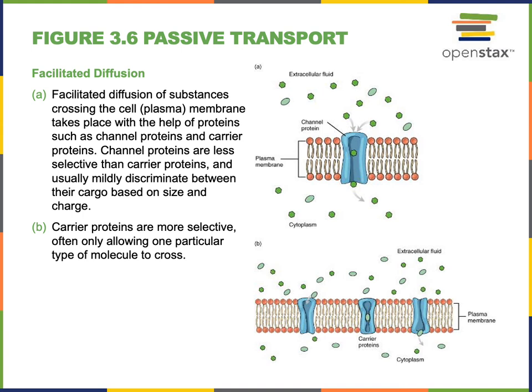Sodium will be moving from a higher concentration in the extracellular fluid to a lower concentration within the cytoplasm. Carrier proteins are a little more selective than channels. The carrier protein will bind to the specific structure of the molecule being transported across the plasma membrane. Carrier proteins are typically required to enable facilitated diffusion of larger molecules like glucose, amino acids, or proteins.